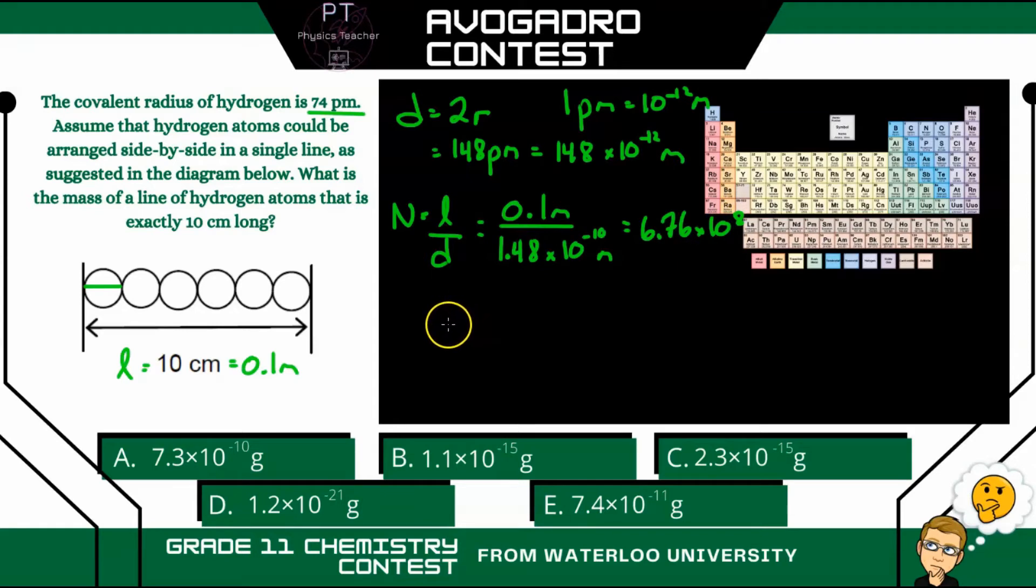All right, so that's how many hydrogen atoms we have. And if we want to figure out the mass of those hydrogen atoms, we first need to figure out how many moles there are.